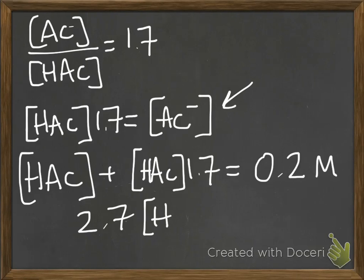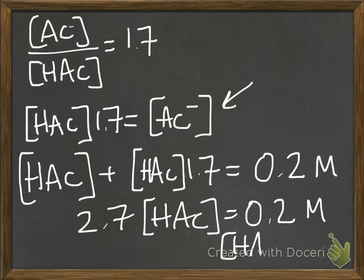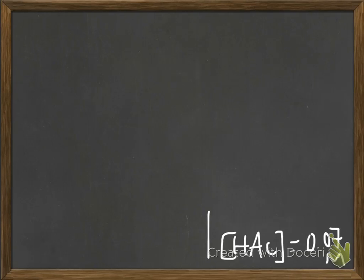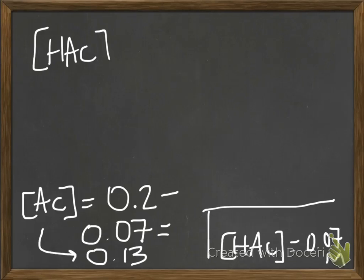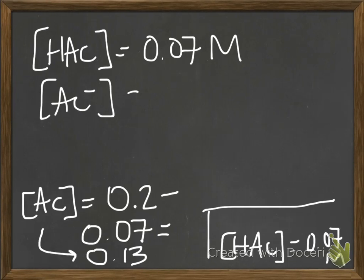So when you do the math, you can solve for acetic acid, and that will be 0.07 molar. So that's half of the problem, and the other half is the amount of acetate that you have. You know the total amount of either acetate or acetic acid is 0.2, so you subtract the amount of acetic acid you have, and that gives the amount of acetate. So you've got acetic acid being 0.07 molar, and acetate being 0.13 molar.